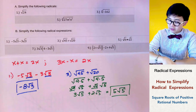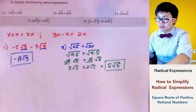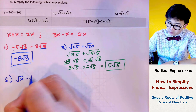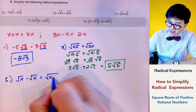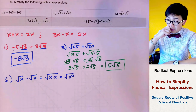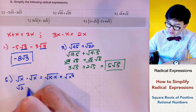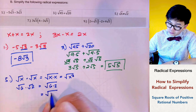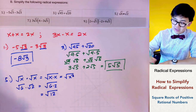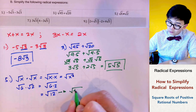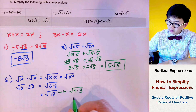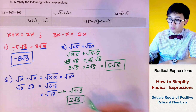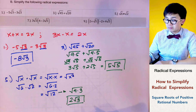For problem number 5, we are multiplying radicals. Multiplication is straightforward: square root of x times square root of x equals the square root of x squared. Applying this, square root of 6 times square root of 2 becomes square root of 12. Since 12 is not a perfect square, we factor it as square root of 4 times 3, and since 4 is a perfect square, this simplifies to 2 square root of 3.